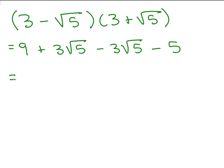Let's do the whole number parts — the integers. I have 9 minus 5, which is 4. And then 3 square roots of 5 minus 3 square roots of 5 — that's 0. So the answer is just 4. Isn't that cool? When I multiplied those two binomials together that had a square root in them, I ended up with just the integer 4, no square roots at all.